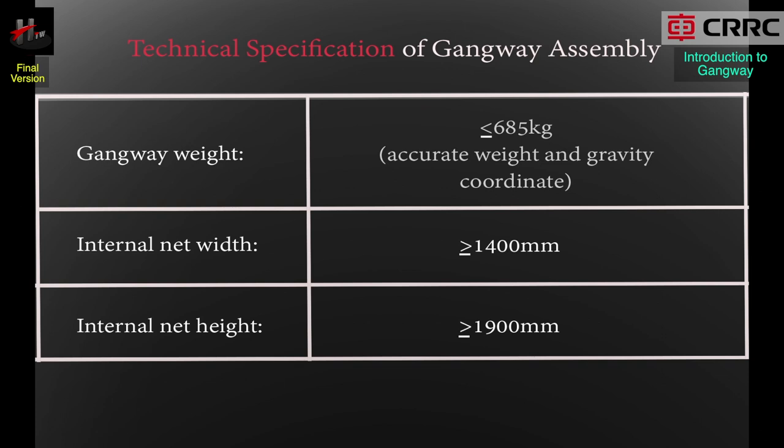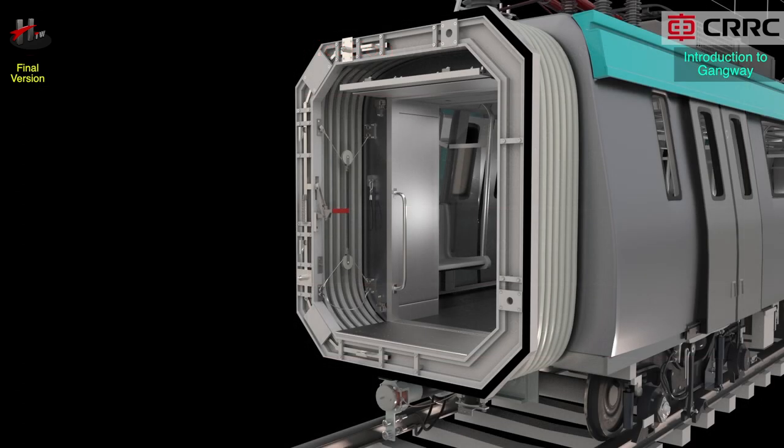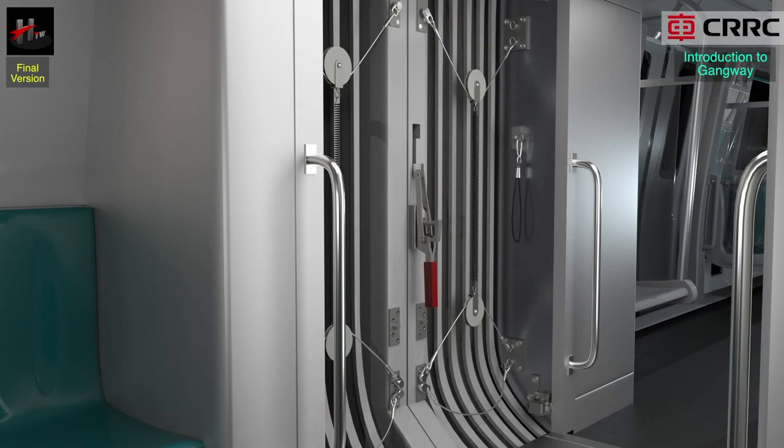Following are the physical parameters of the gangway. This is the external and the internal structure of the gangway.